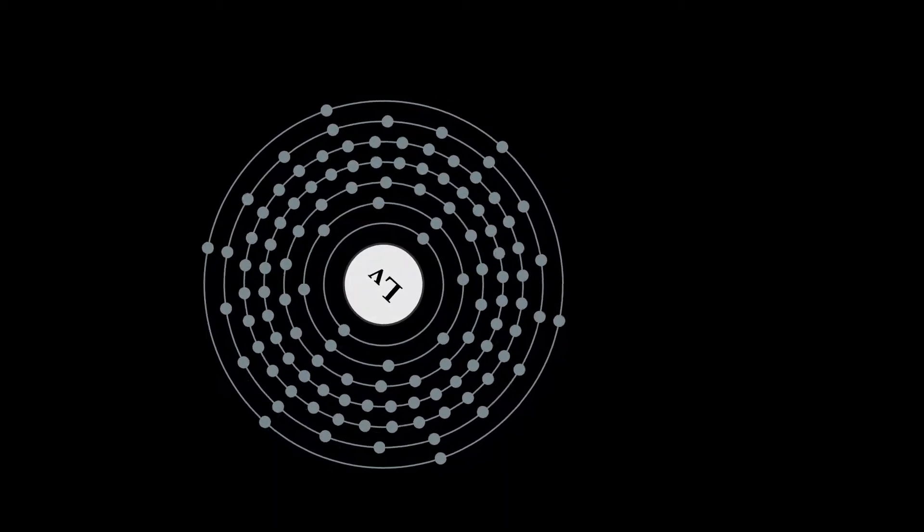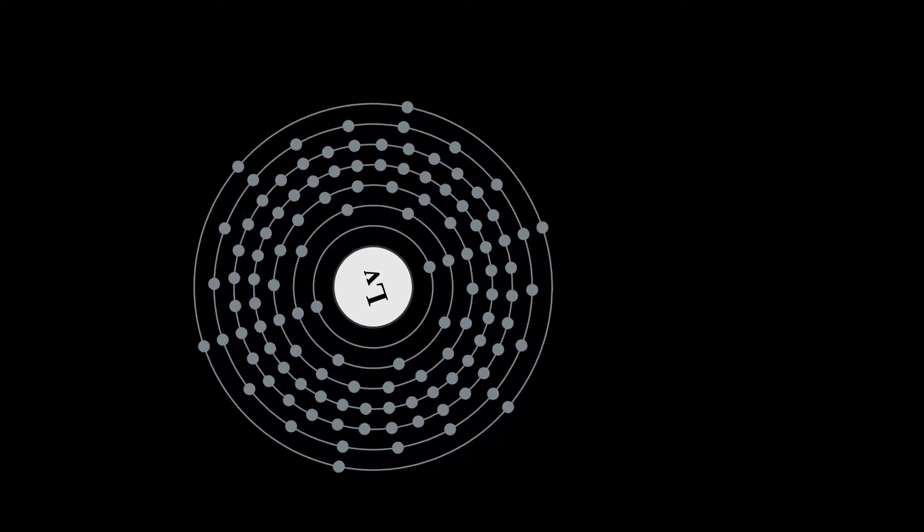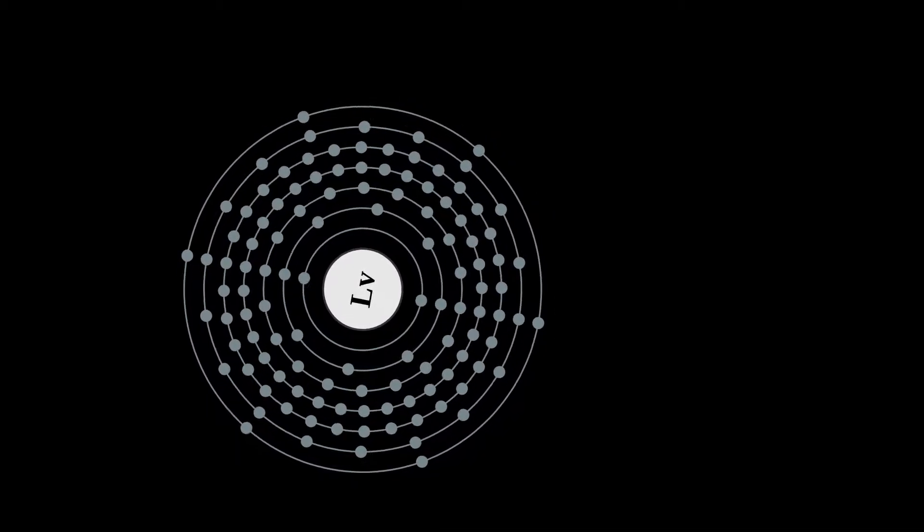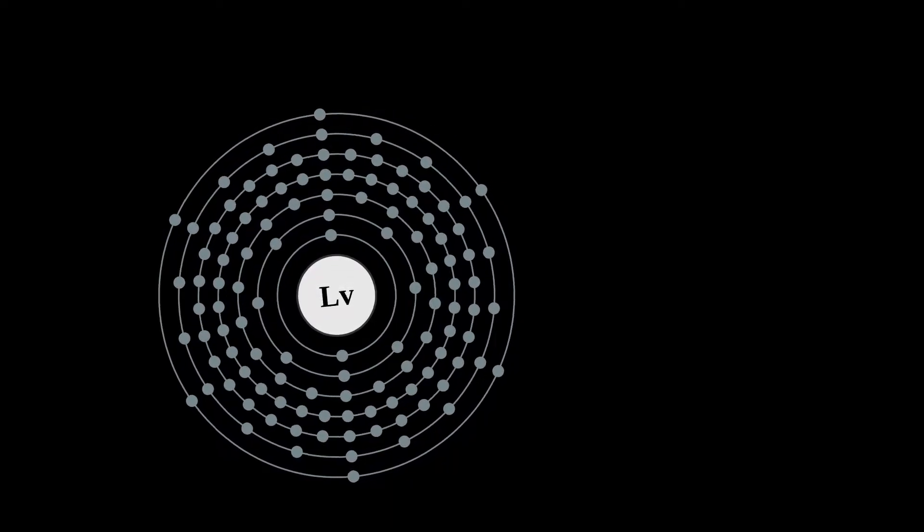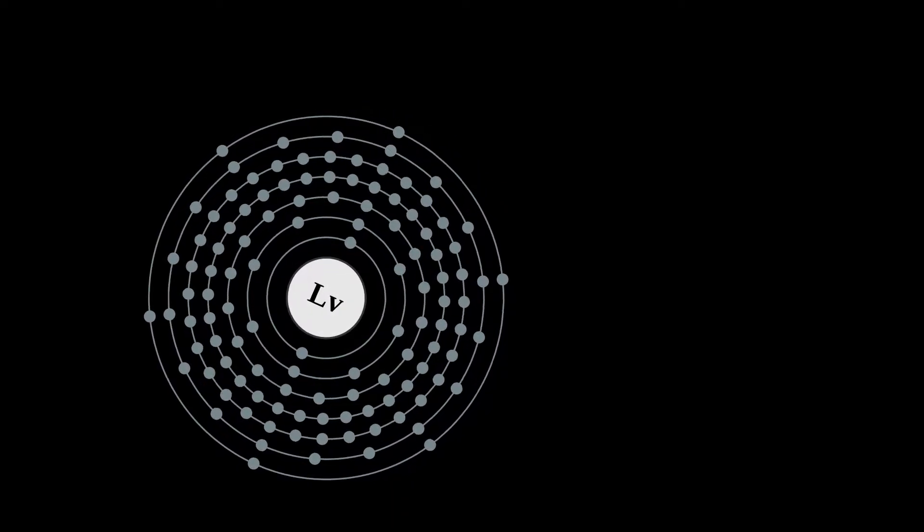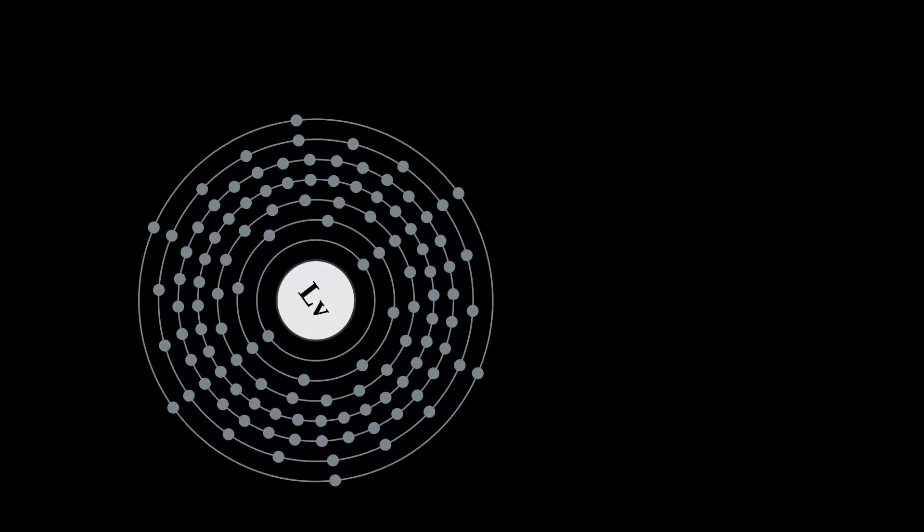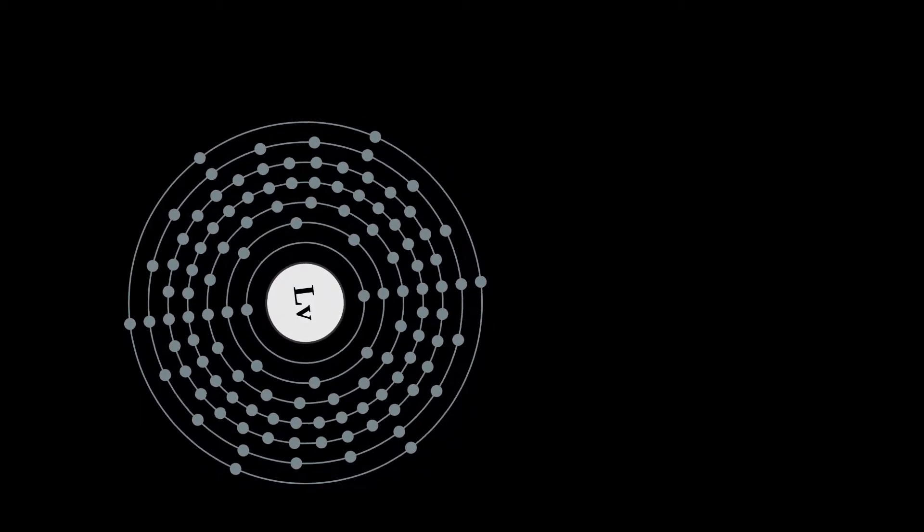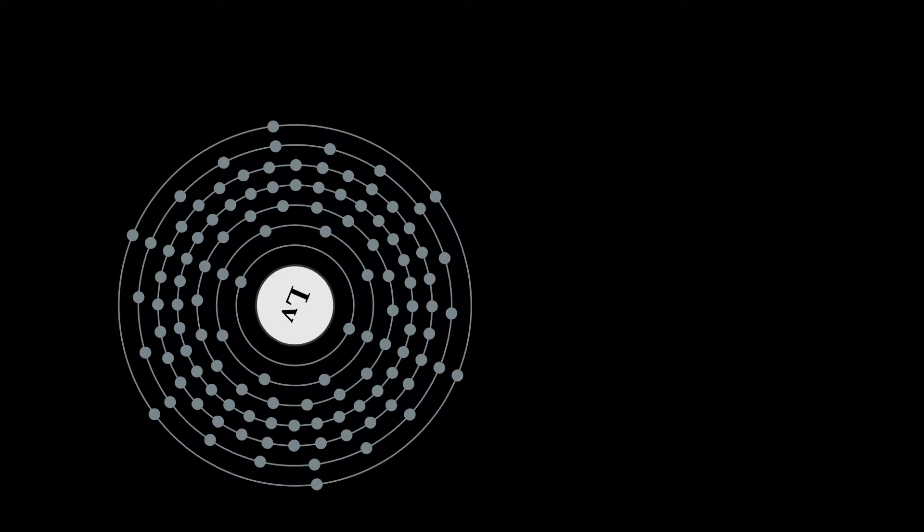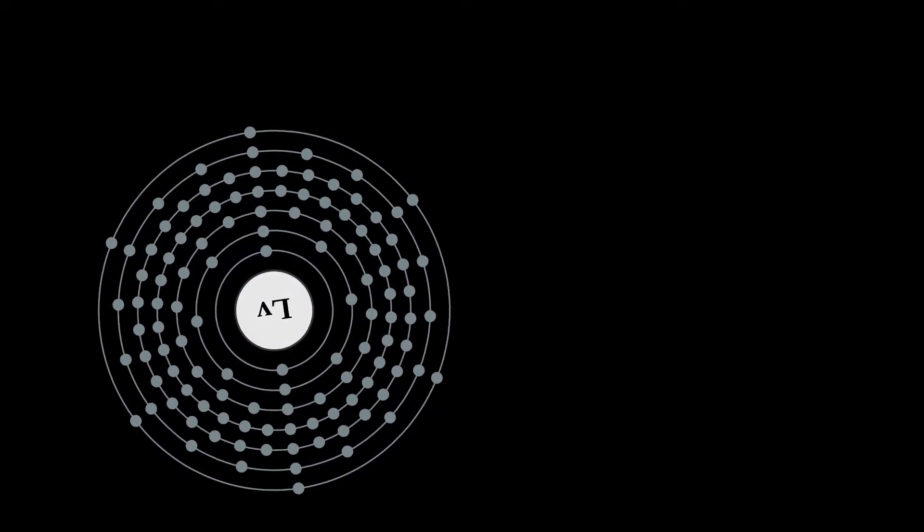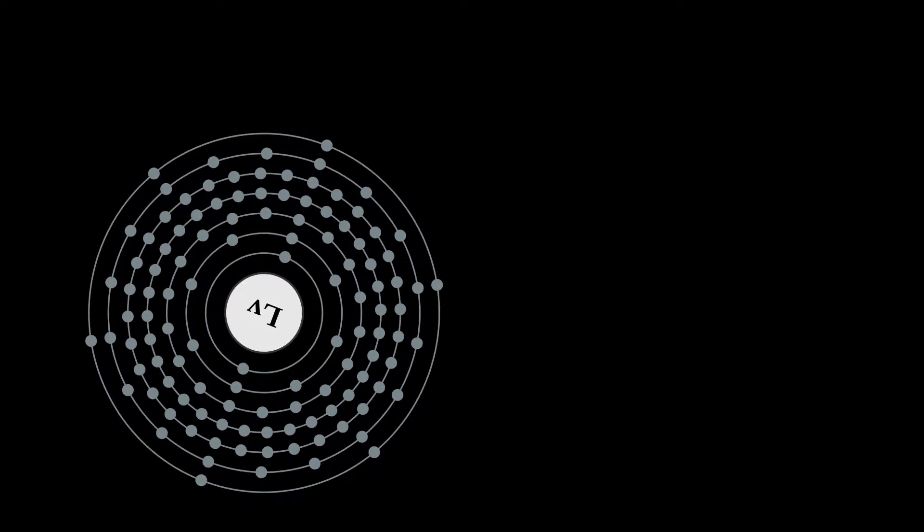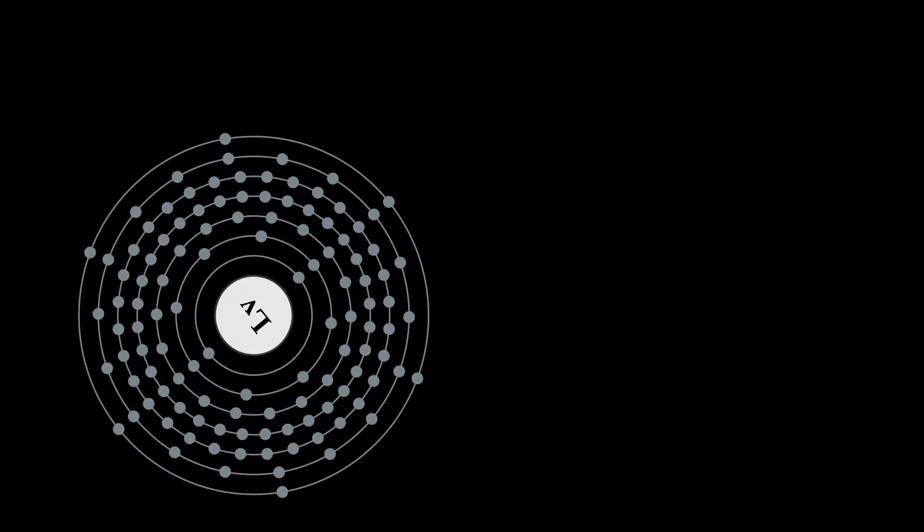The element is named after the Lawrence Livermore National Laboratory in the United States, which collaborated with the Joint Institute for Nuclear Research in Dubna, Russia to discover Livermorium in 2000. The name of the laboratory refers to the city of Livermore, California, which in turn was named after the rancher and landowner Robert Livermore. The name was adopted by IUPAC on May 30, 2012.